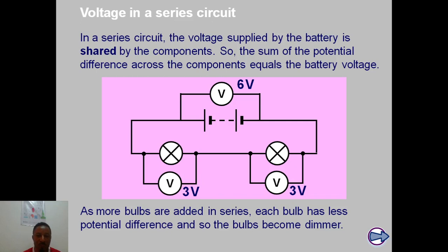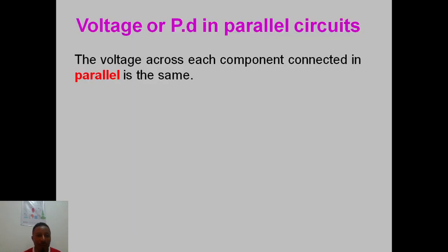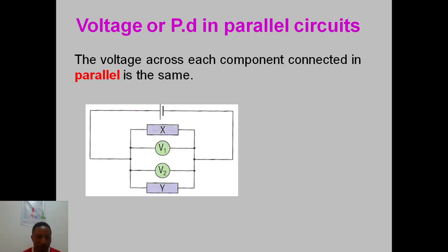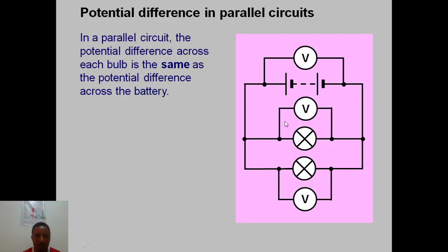Voltage in a parallel circuit: the voltage across each component connected in parallel is the same. If I connect a voltmeter to each bulb in a parallel circuit, I will discover that the voltage across this bulb is the same as the voltage across that bulb. The reason is because a parallel connection is similar to a connection that is direct to the battery — each item gets to use the same amount of energy.